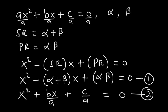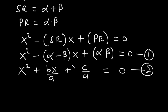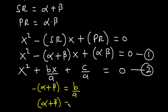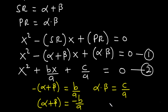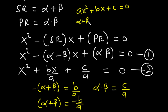Now we can compare the two equations. Considering the x term, we have from equation one: negative of the bracket alpha plus beta is equal to b over a. So, finally, alpha plus beta is equal to negative b over a. Now, for the constant, alpha beta from equation one is equal to c over a from equation two. So, given the quadratic equation ax squared plus bx plus c equals zero, the sum of roots alpha plus beta is equal to negative b over a, and the product of roots alpha beta is equal to c over a.